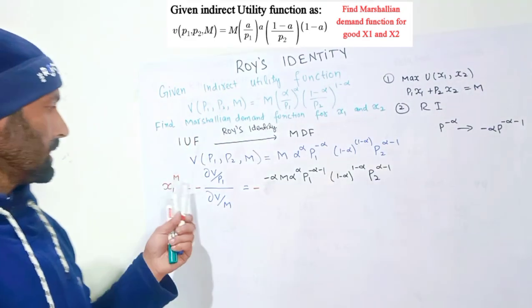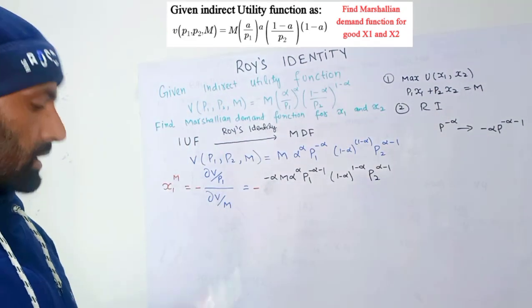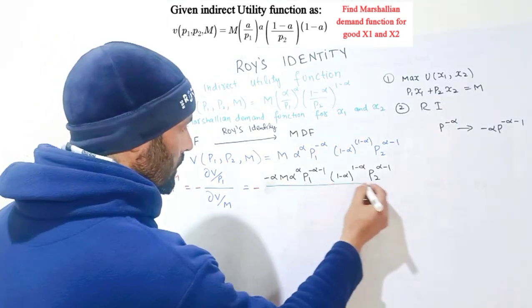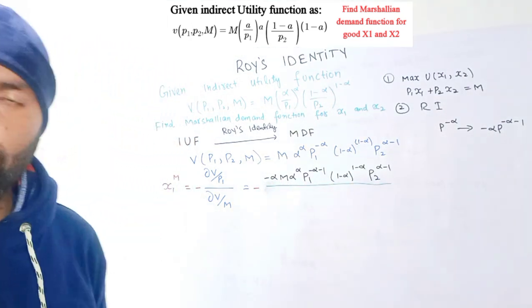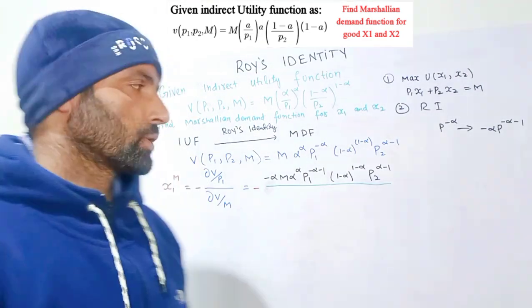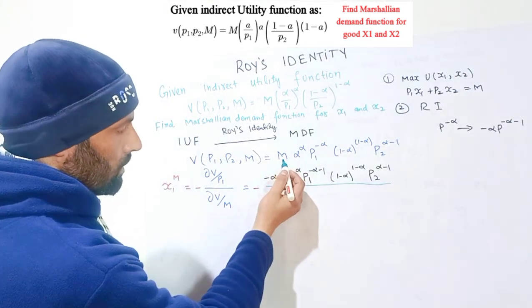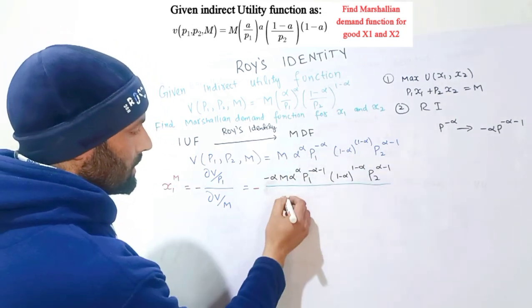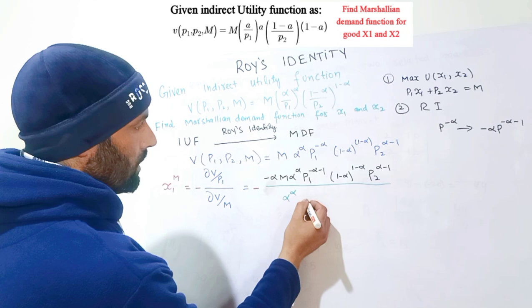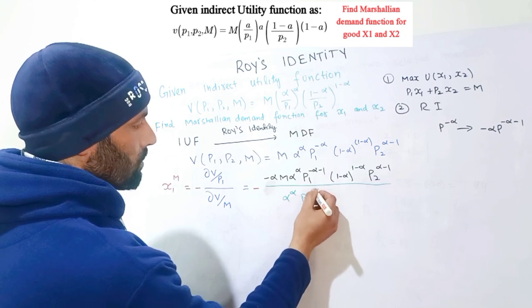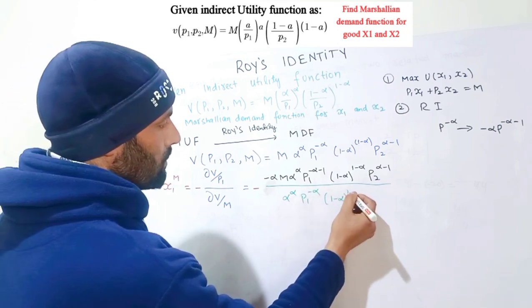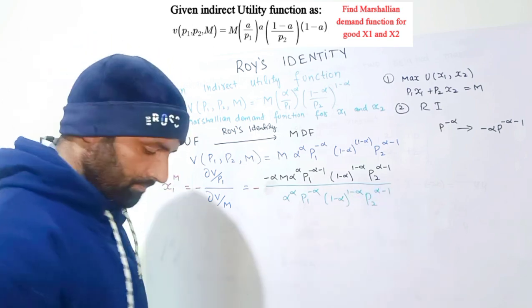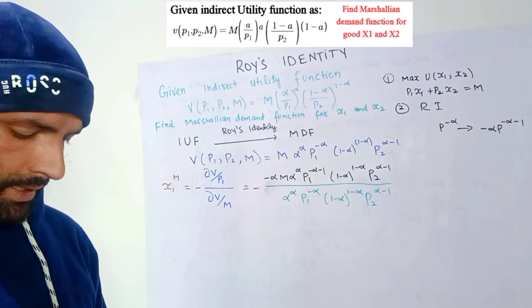We divide this by ∂V/∂m. Since the derivative of m is 1, ∂V/∂m = alpha^alpha * p1^(-alpha) * (1-alpha)^(1-alpha) * p2^(alpha-1).